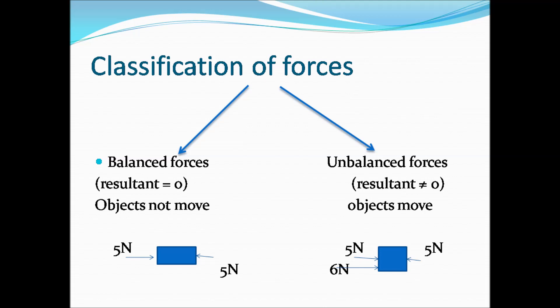Next, balanced and unbalanced forces. Balanced force: when such forces act on an object, the object does not move — the forces are balanced and the resultant is zero. For example, two equal and opposite forces of 5 N on a block result in zero net force.